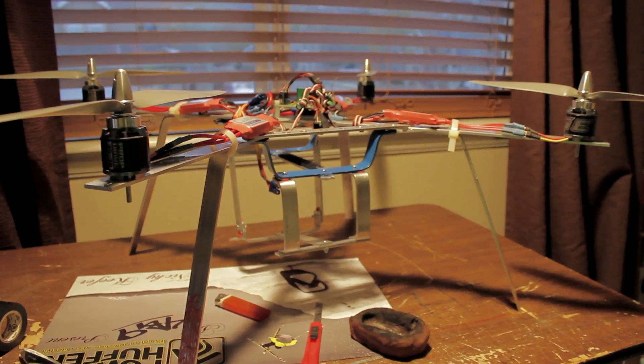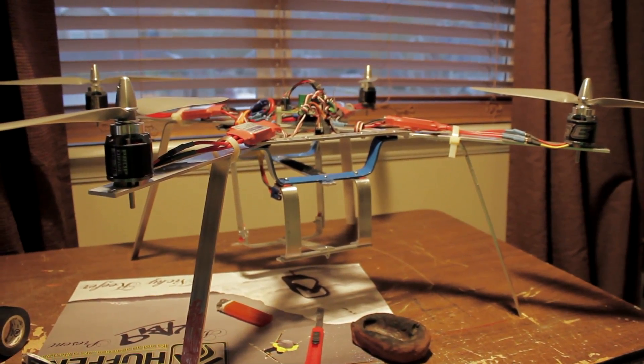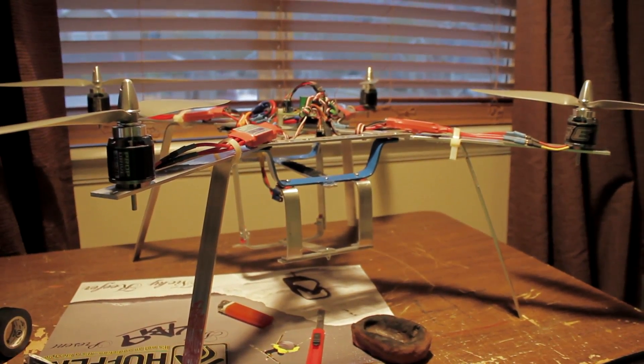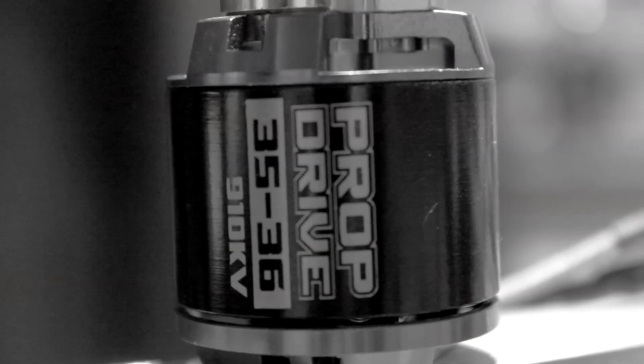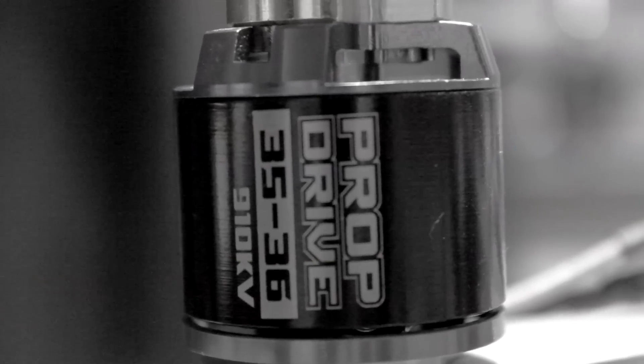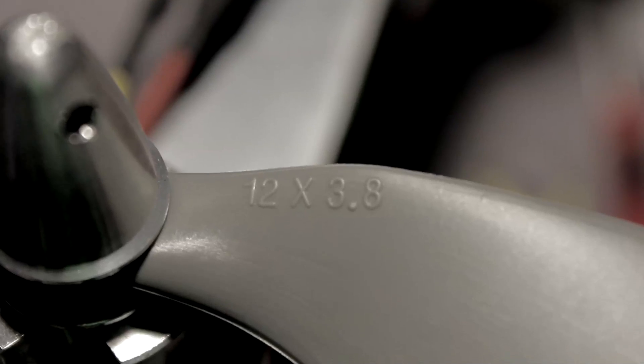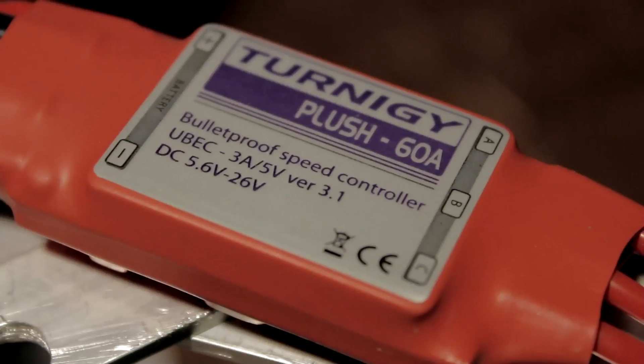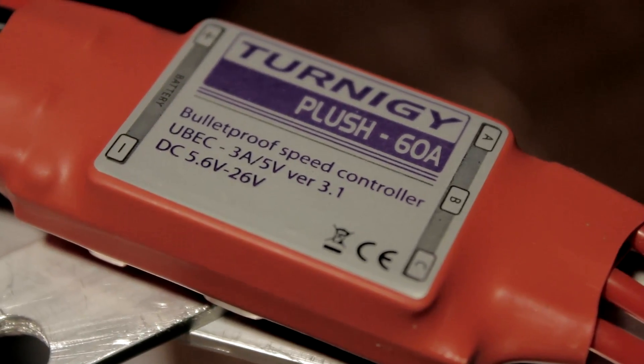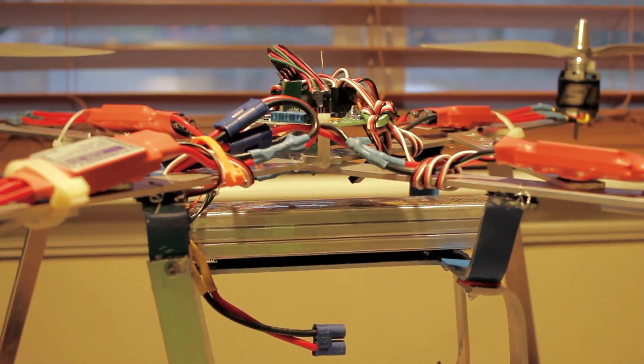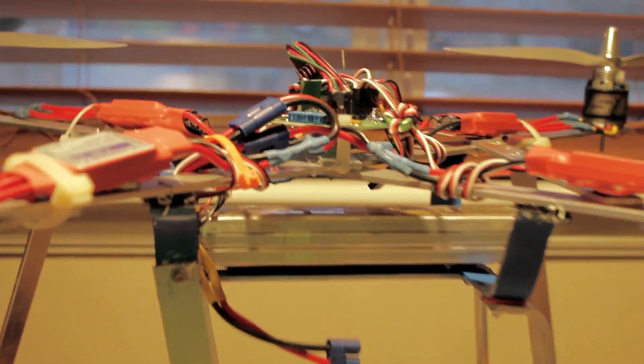This is my quadcopter grande. It's a 27 inch quadro x copter with Turnigy 3536 1910 KV motors with 12 by 3 APC props. It's got 60 amp Turnigy ESCs, a 5100 milliamp three cell battery.